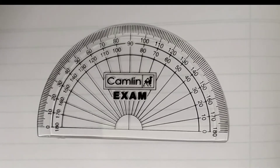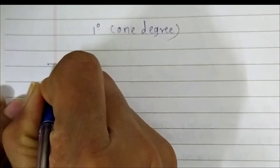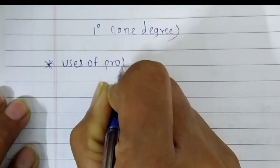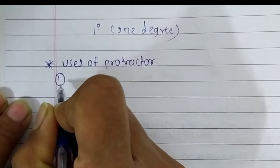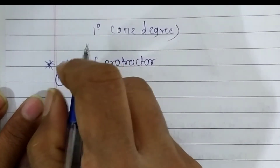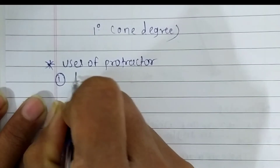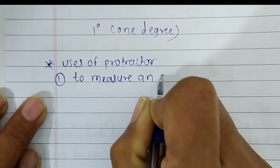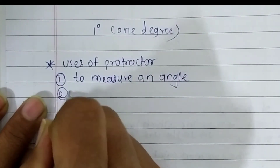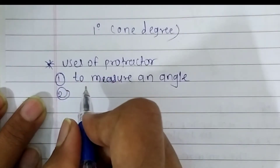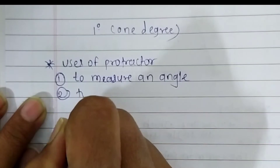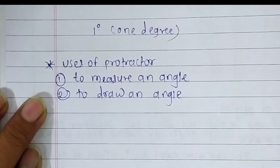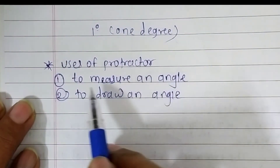A protractor is used to measure an angle. The first use of the protractor is to measure an angle, or you can say to measure a given angle. The second use is to draw an angle according to a given measure. These two are the uses of the protractor.